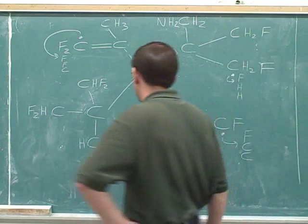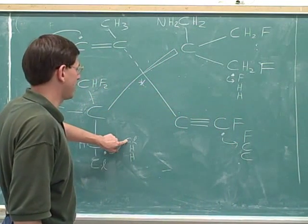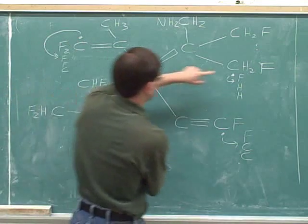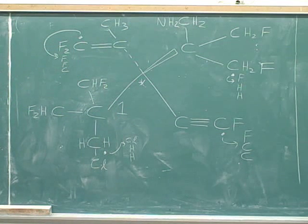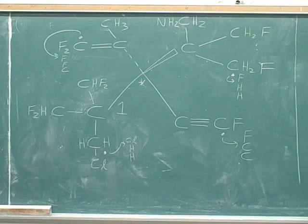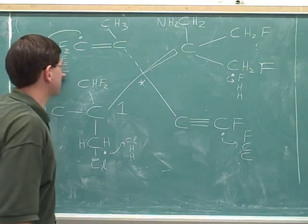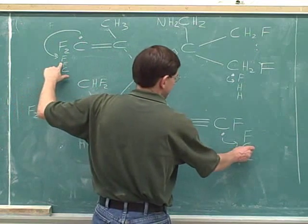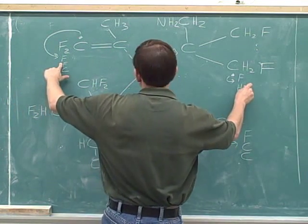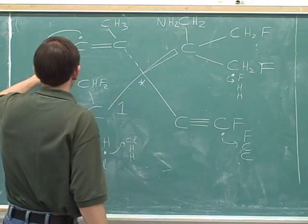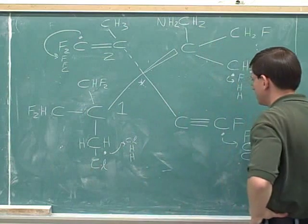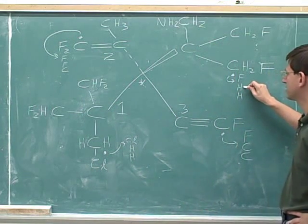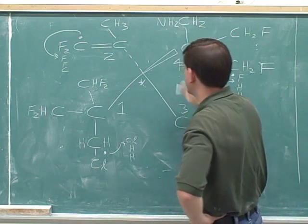First points of difference: the chlorine beats all the other first atoms in the list — this chlorine beats the fluorine and this fluorine and this fluorine. So the bottom-left group gets the number one priority. All the other first atoms are fluorines, so those are tied. But then we have a difference in the second atoms: the second atom in this list is a fluorine, the second in this list is a carbon, and the second in this list is a hydrogen. So the second atom being a fluorine gives us the number two priority, a carbon gives number three priority, and a hydrogen gives the lowest, number four priority.